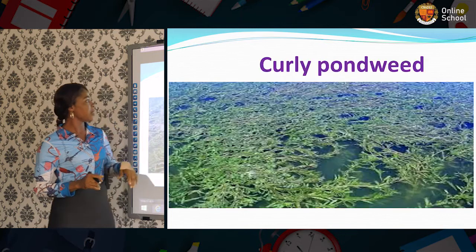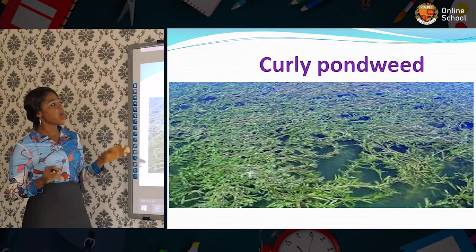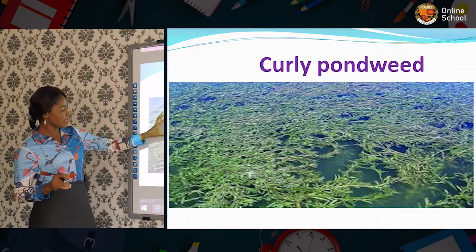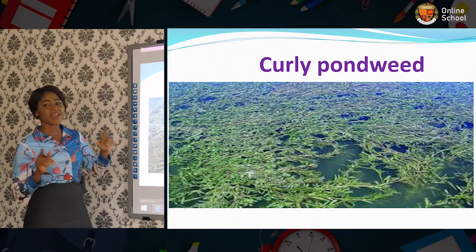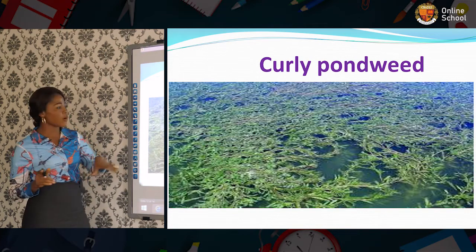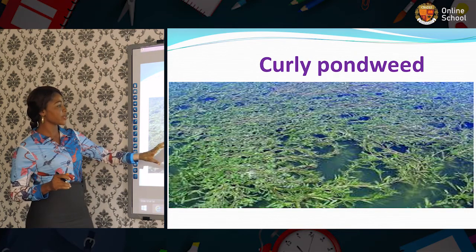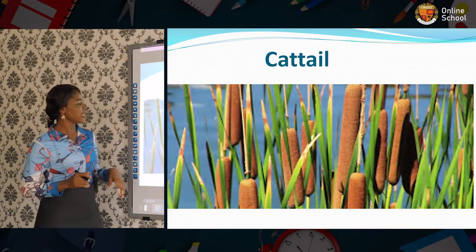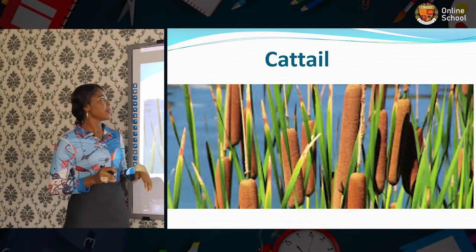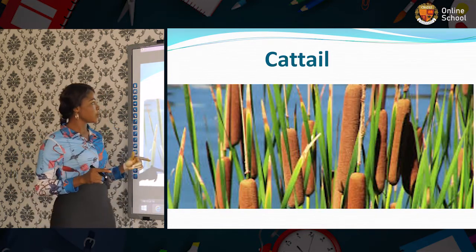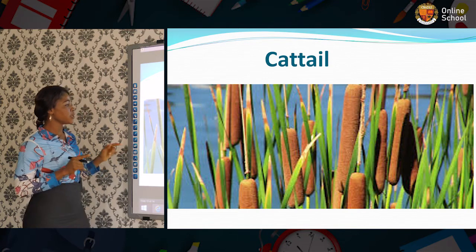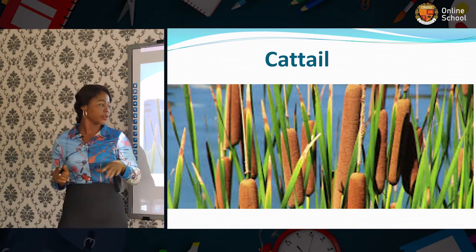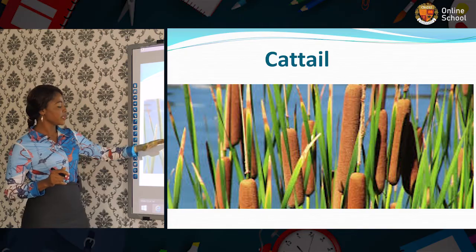The next one is coontail pondweed — look at the coontail pondweed here. If you have not seen it before, you can look at the picture here. The next one here is cattail — it also lives in the water. If you have not seen it before, also you can look at the picture.